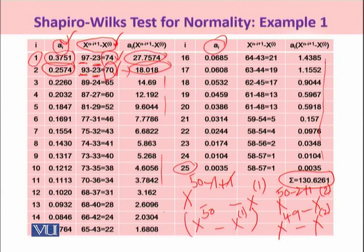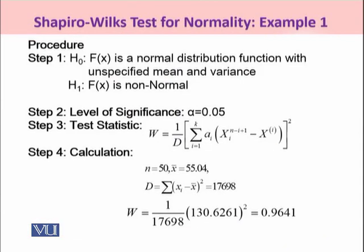Now we will use this to calculate our W value under Shapiro-Wilks test. But before that, we would have to outline the complete procedure for testing the sample data for normality. Under H naught, we are assuming that F(x) is the normal distribution function with unspecified mean and variance. Alpha is 0.05.